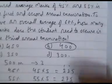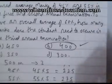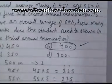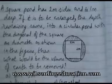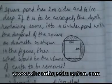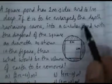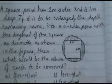So x = 400, meaning the student needs to secure 400 marks in the third exam. Option B is correct.